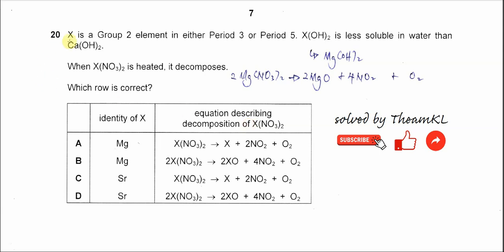Question 20. X is a Group 2 element in either Period 3 or Period 5. X hydroxide is less soluble in water than calcium hydroxide.